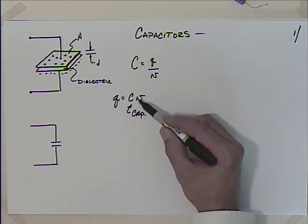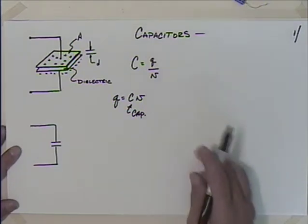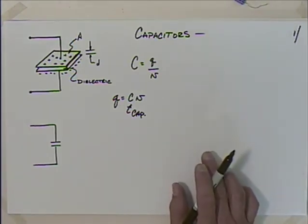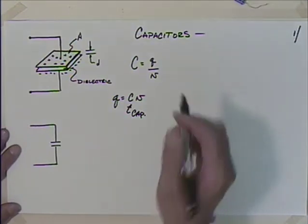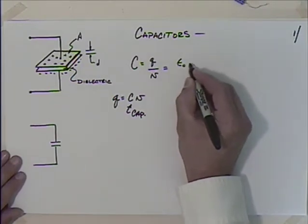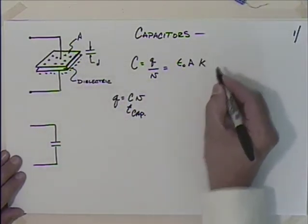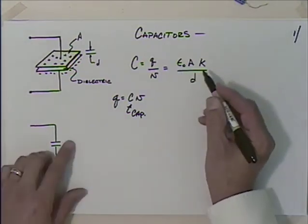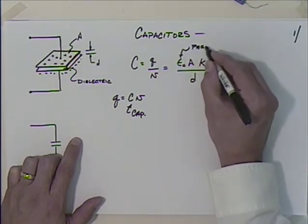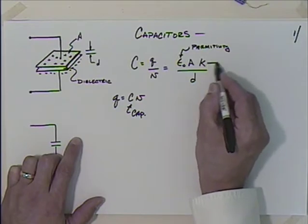You'll start to see me writing in lowercase quantities because as we look at capacitors and inductors, we're going to have time-varying entities. We usually use uppercase letters for constant quantities and lowercase for things that can vary with respect to time. The capacitance is also equal to the permittivity constant epsilon-naught times the area of the plate times the dielectric constant K, divided by the distance between the plates.